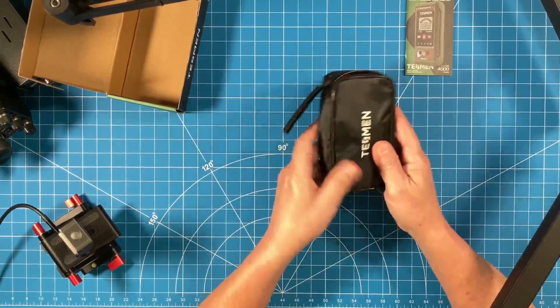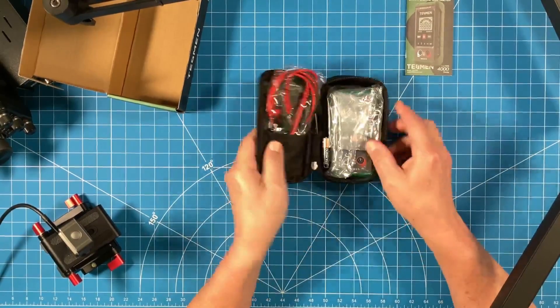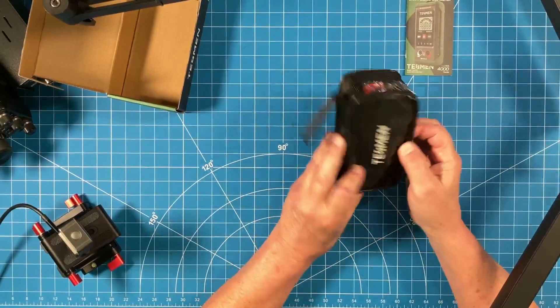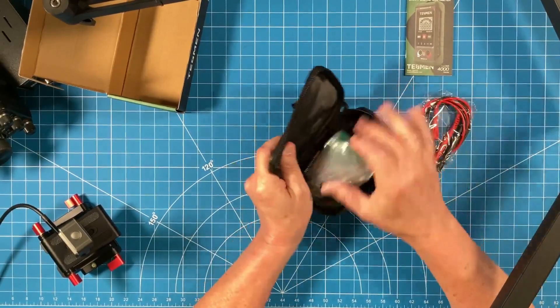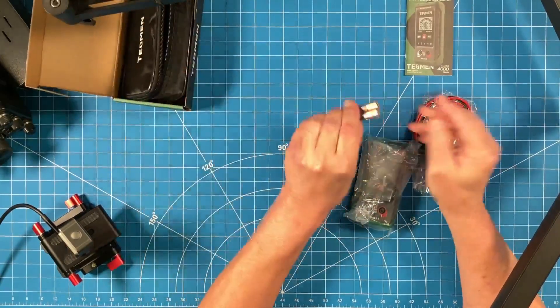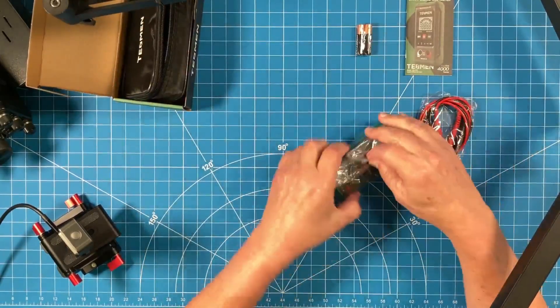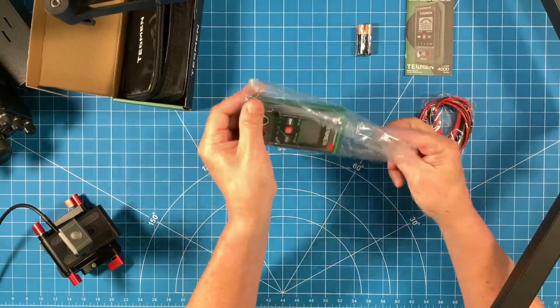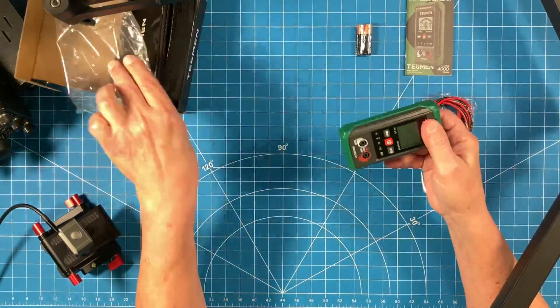It comes in an okay case, and when I mean okay for less than $10 for a multimeter, that's a pretty good case. We have our leads, we have the multimeter, and we have some Duracell batteries. That's a nice touch that we have some good quality brand name batteries. Let's get this out of the plastic bag and see what we think.